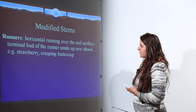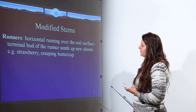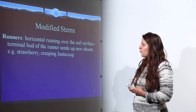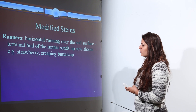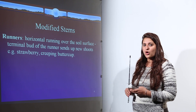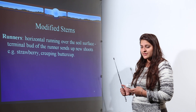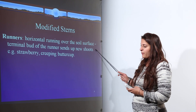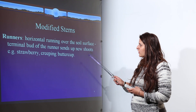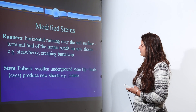The parts of the parent plant are specially modified for this purpose. One example is modified stems — runners, which are horizontal stems running over the soil surface. This occurs in strawberry and creeping buttercup, where the terminal bud of the runner develops into new shoots.